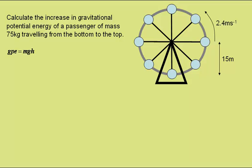Well, gravitational potential energy is given by mass times gravitational field strength times height which in this case is 75 kilograms times 9.81 metres per second squared times a change in height of 30 metres, 15 metres to the middle, 15 metres to the top, giving an increase in gravitational potential energy of 22072 joules or 22 kilojoules.